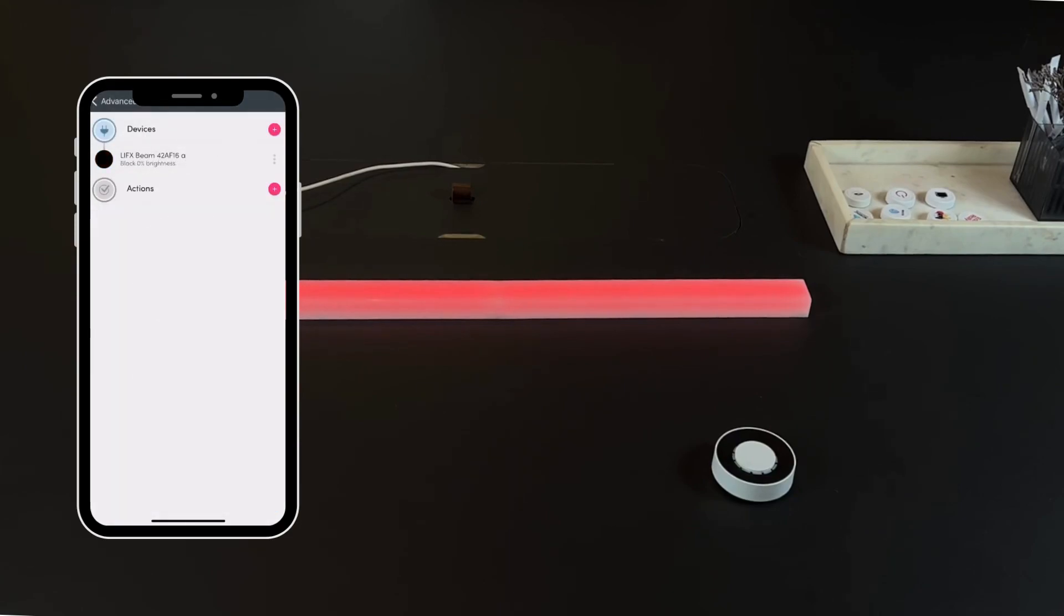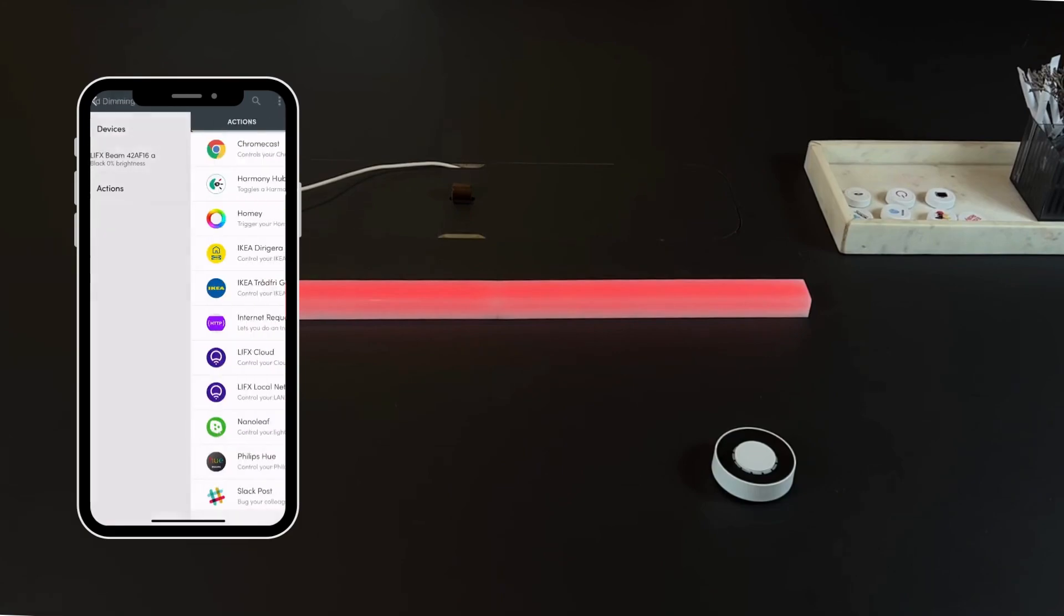Additionally, you can set up to trigger a different action at the same time you dim the lights off, such as lowering the blinds. To do this, instead of choosing the device, you will need to choose the actions. Tap the plus symbol again.